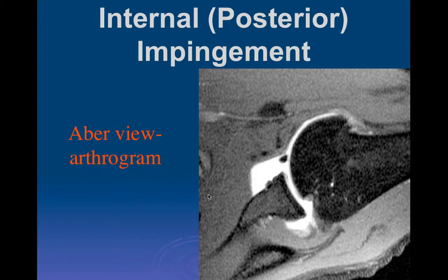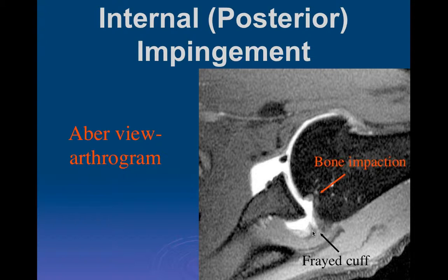The one time I like to do ABER views is in young overhead athletes, primarily to look for posterior impingement. Here's an example of a baseball pitcher in the ABER position - we can see an impaction injury at the posterior aspect of the greater tuberosity. This is in the same location where you get Hill-Sachs impactions and where you see erosion at the insertion of the infraspinatus tendon. The third cause for a defect in the bone in that location is posterior impingement, and you'll only see posterior impingement in high-level athletes. We can also see fraying of the cuff at the overlap area where the infraspinatus and supraspinatus fibers overlap and insert.